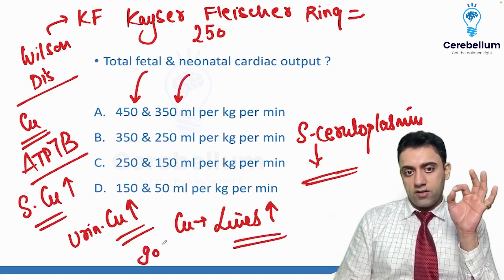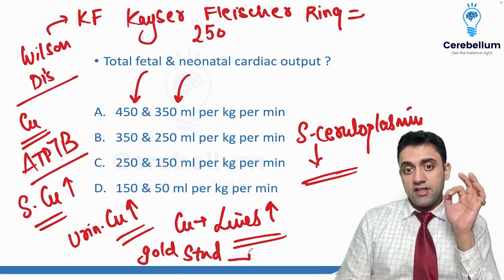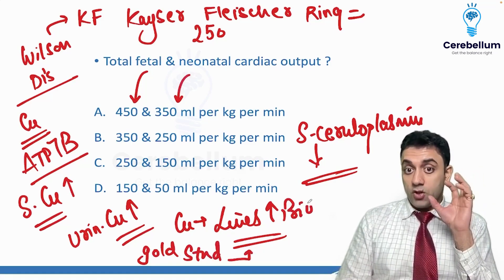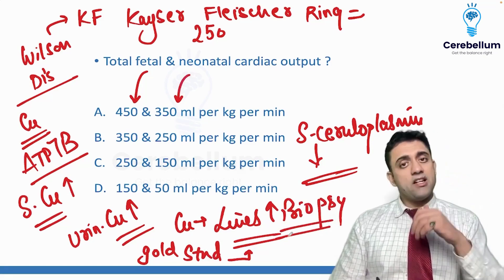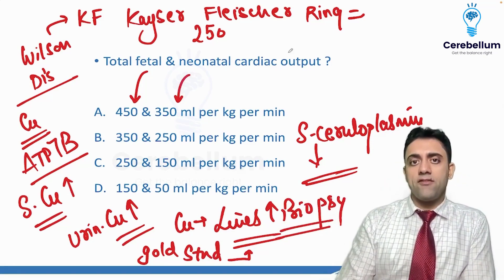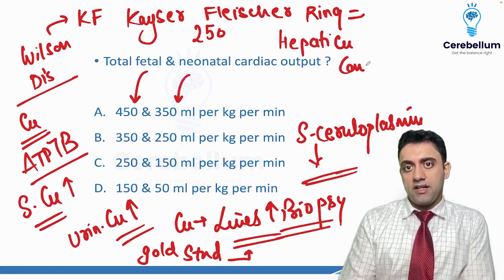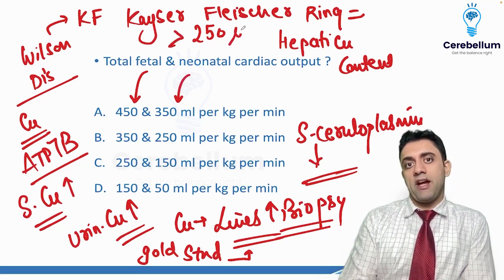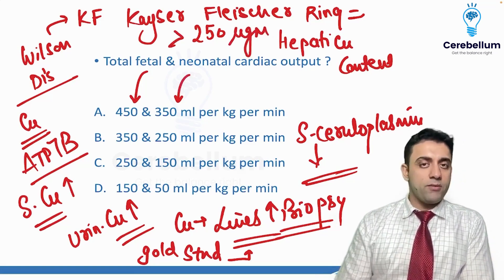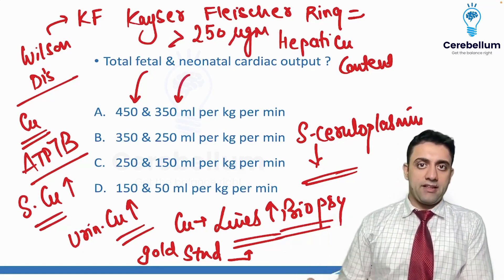The gold standard investigation of choice in Wilson disease is liver biopsy. In liver biopsy, we look for the hepatic copper content — the cutoff is more than 250 microgram per gram dry weight of liver.